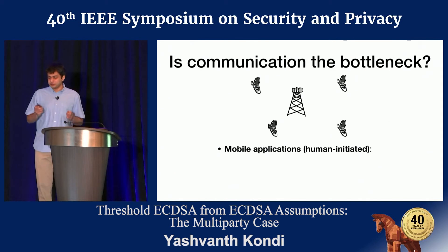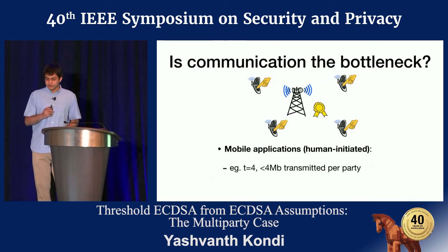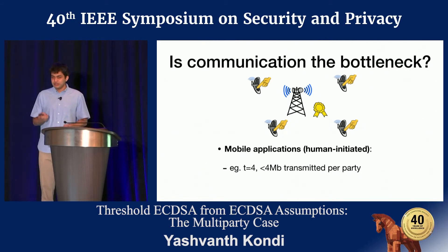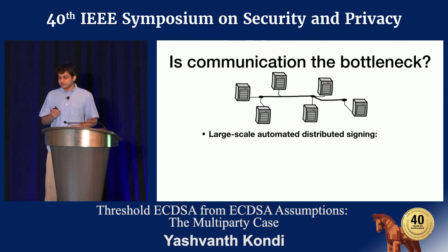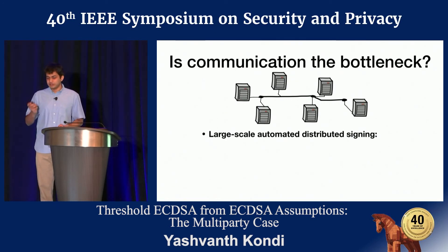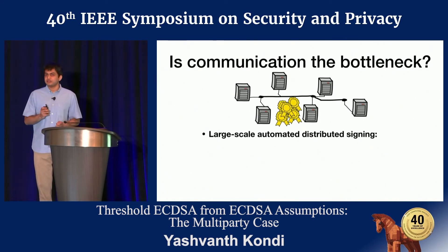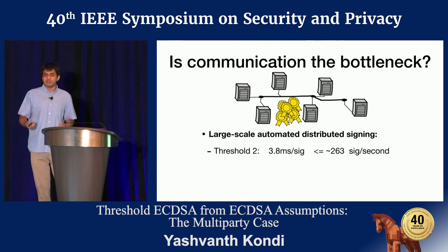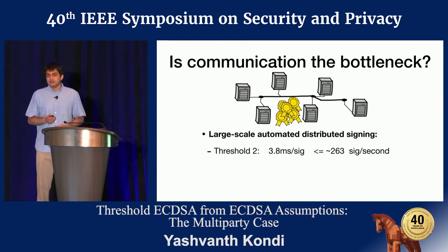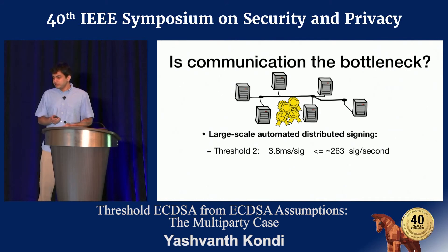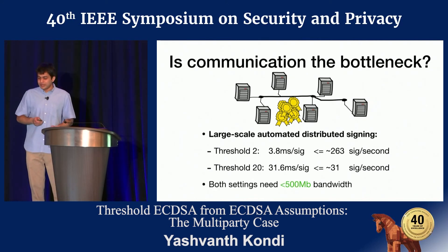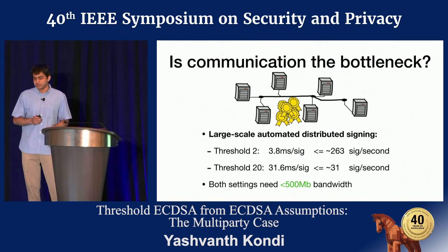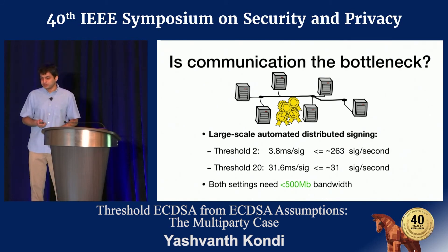A quick note on whether communication is really the bottleneck. Consider a mobile application which is human-initiated — a bunch of people on their phones pressing a button to get a signature. With four people doing this, it's less than four megabits transmitted per party, which for a responsive application on LTE is quite reasonable. On the other end, consider large-scale automated distributed signing with many servers producing many signatures. By computation cost alone, throughput is limited to about 260 signatures per second in the low threshold setting and about 31 per second in the high threshold setting. In both cases, we need less than half a gigabit of data per party — quite reasonable with gigabit connections.